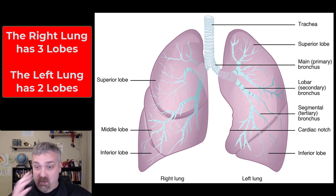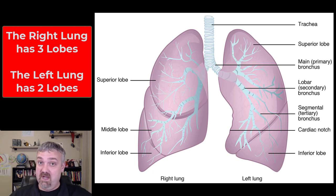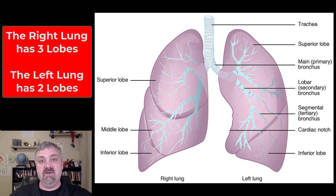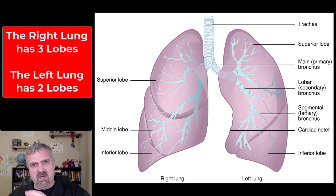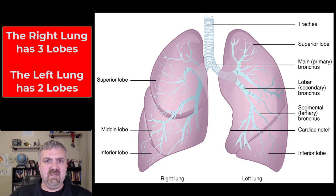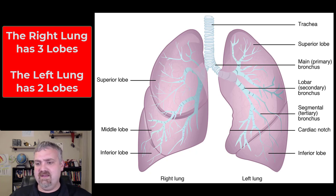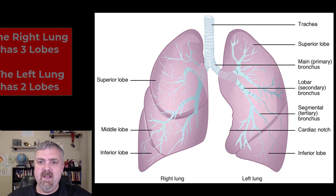The right lung is going to be shorter than the left lung, but it's still going to be a lot bigger. The reason it's shorter is because the liver is bumping up right there underneath the diaphragm. The left lung is kind of skinnier because of the heart, but a little bit longer. The right lung is a little bit shorter but much wider because there's no heart taking up that space.